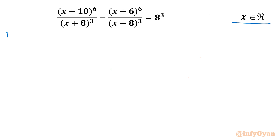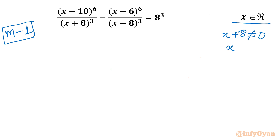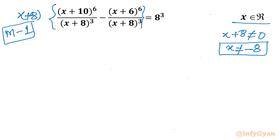I will demonstrate two methods. Method number 1: the domain of the equation requires the denominator cannot be zero, so x plus 8 cannot be zero, meaning x cannot equal minus 8. Since x cannot be negative 8, I can multiply both sides by (x+8)^3 to clear the denominators. Cancelling those denominators, what is left is: (x+10)^6 minus (x+6)^6 equals 8^3 times (x+8)^3.